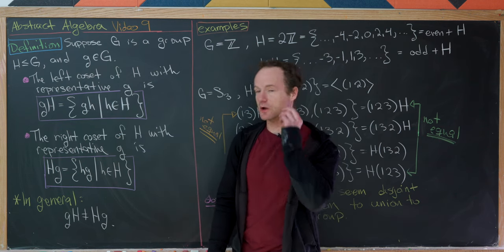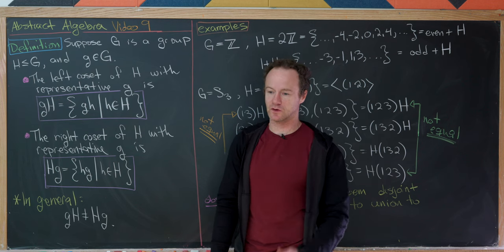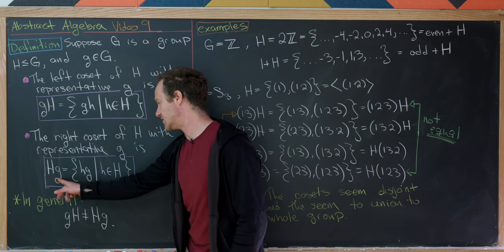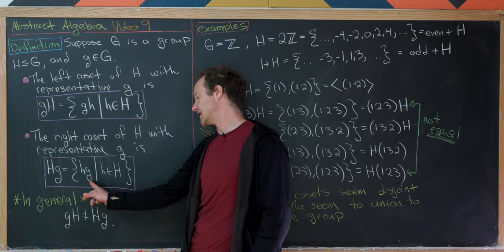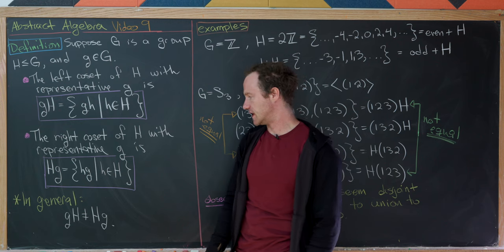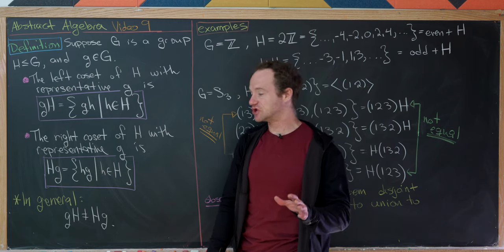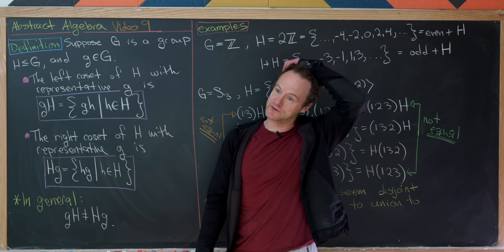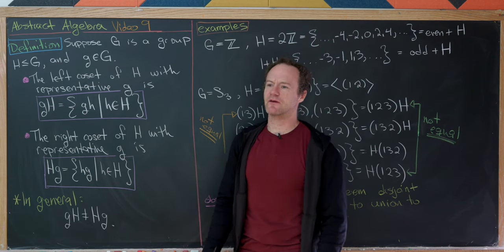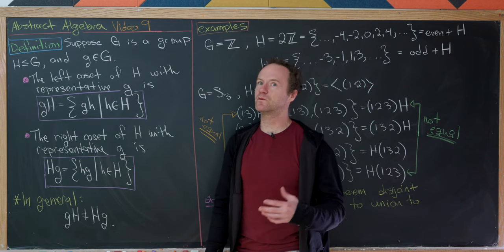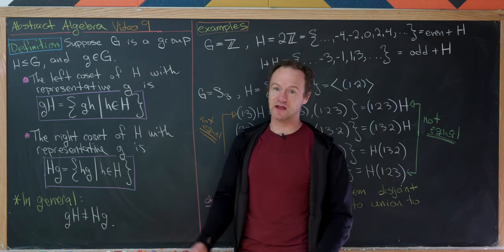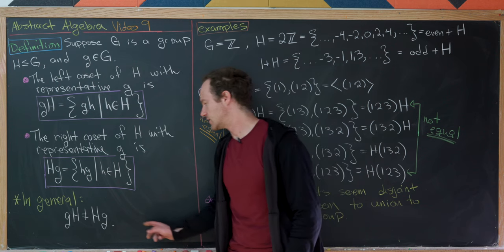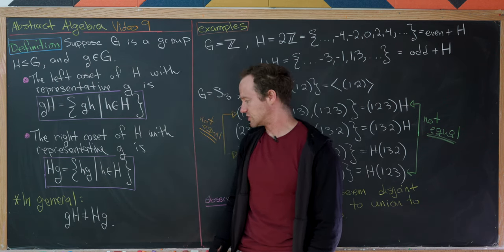Likewise, we can define something called the right coset, which is all right multiples of elements of H by g — that will be Hg, the set containing all little h times little g, as h runs through all of H. In general, right cosets are not generally equal to the corresponding left coset, because generally we don't have commutativity in groups. But we will see cases when these are equal even outside of abelian groups.